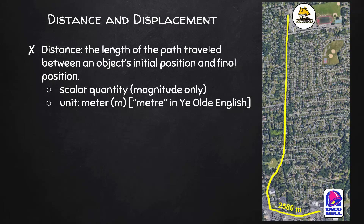More frequently, I'll stop at Taco Bell on my way home after school. Since there's more traffic at this time, I like to take the back roads. When I follow this route, my distance is 2,960 meters. For either of these trips, we can determine my displacement.